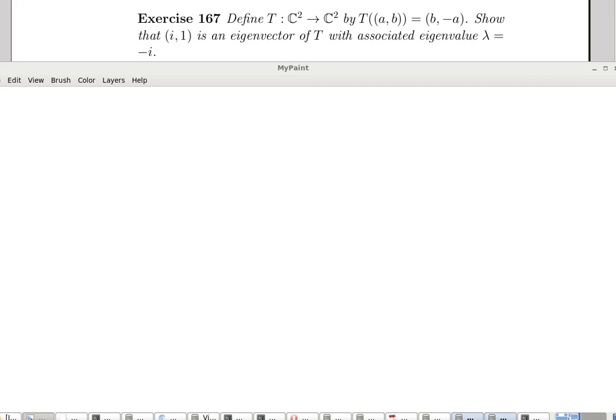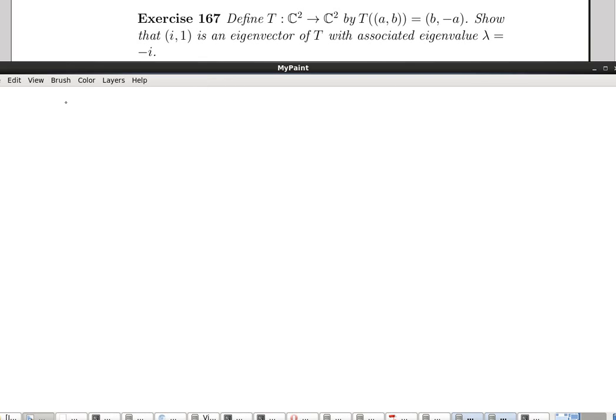All right, so I'm going to show that this is an eigenvector, and the eigenvalue is negative i. So I just need to compare two things. I need to compare these two values, and I can hopefully show that they're equal.